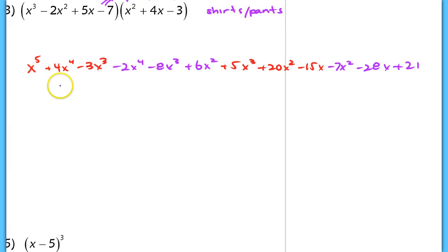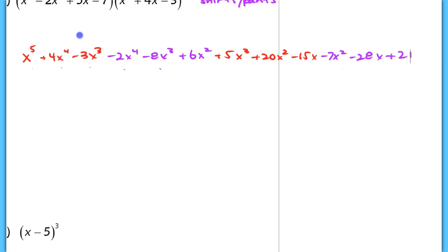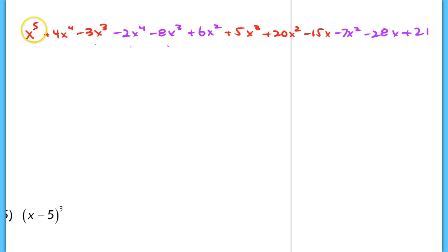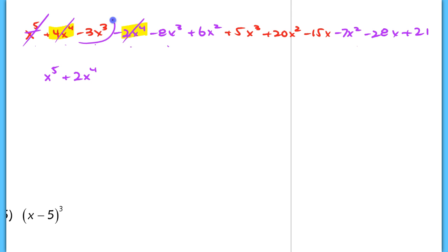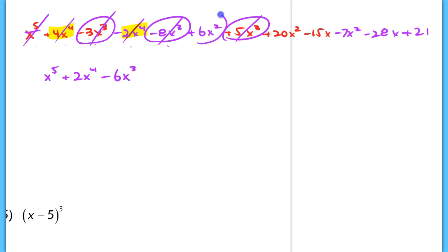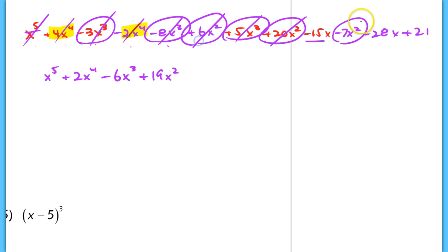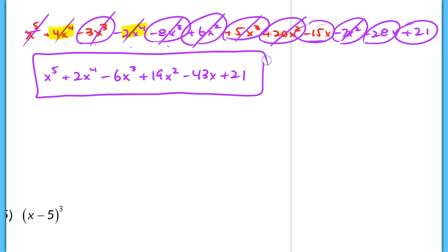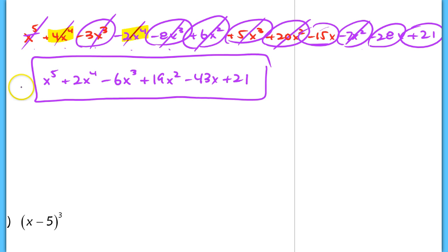If I go through here, I should end up with 12 total terms — count them to make sure you didn't skip any. After that, it's just a matter of combining like terms. x to the fifth stays. 4 minus 2 gives 2x to the fourth. Negative 3, minus 8, plus 5 gives negative 6x cubed. Then 26x squared minus 7x squared gives 19x squared. Negative 15x minus 28x gives negative 43x. And finally, 21. My final simplified polynomial reduces to those terms.